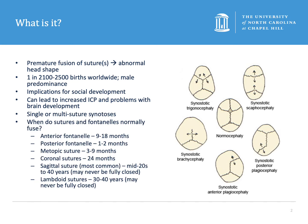Normal suture closures occur in different periods depending on the suture. The posterior fontanelle, which is the junction of the lambdoid and the sagittal sutures, usually is the first to close at about one to two months of age. The next is the metopic suture between the two frontal bones, which closes between three and nine months of age. The anterior fontanelle usually closes around one year of age and the coronal suture usually closes before two years. The sagittal and the lambdoid sutures can close anywhere between age 20 to 40 and may never close in some instances.